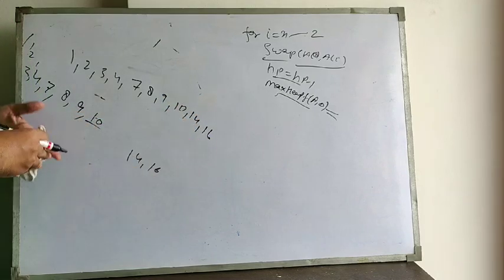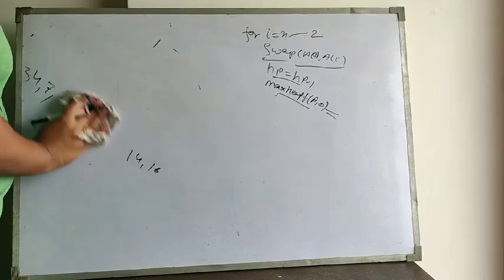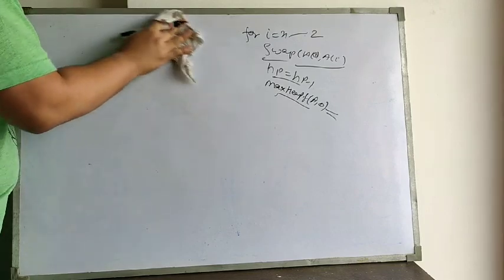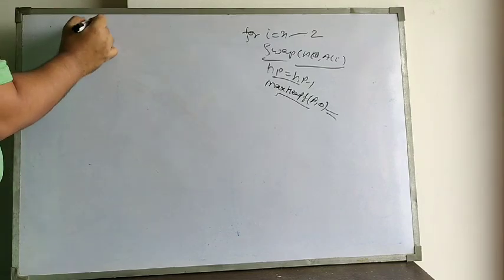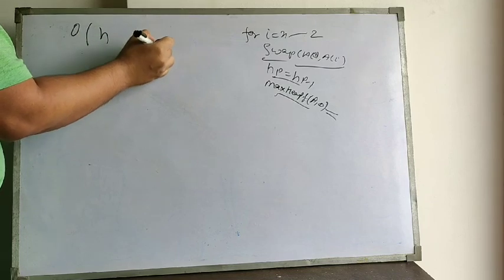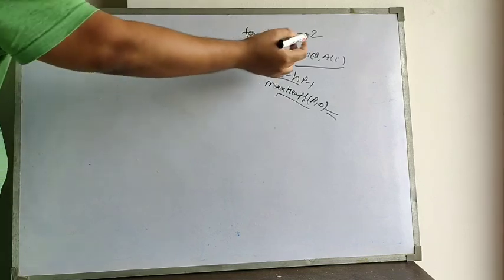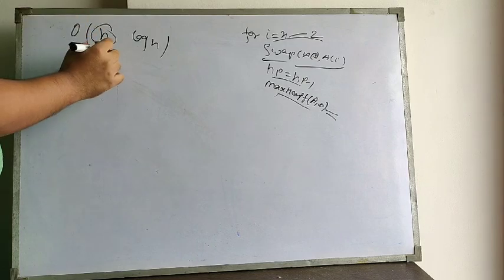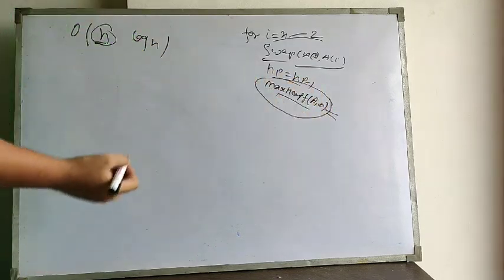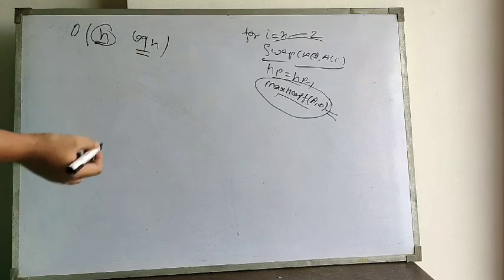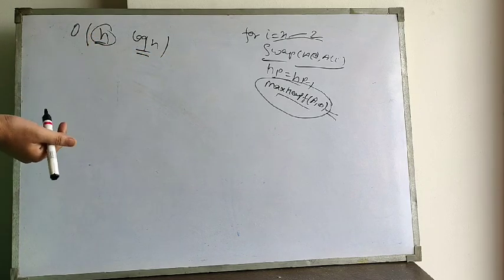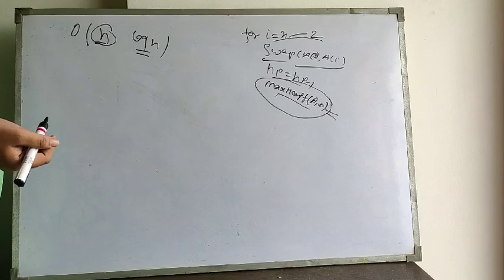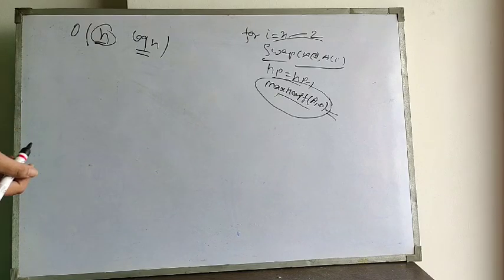This is the procedure of heap sort and the complexity of heap sort is O(n log n). The n comes from iterating over all n elements, and for each element we call the max heapify procedure, whose complexity is O(log n), giving an overall complexity of O(n log n). Thanks for watching, please subscribe to my channel.